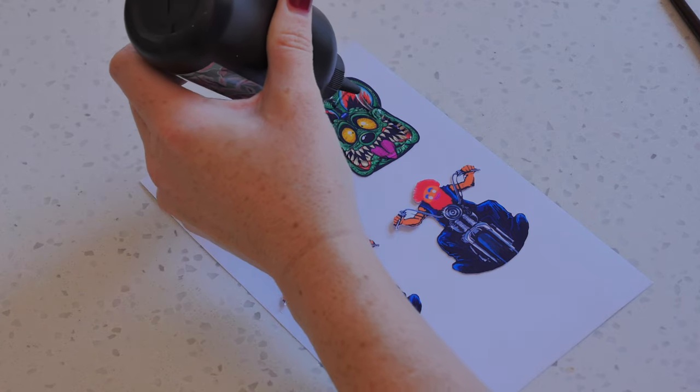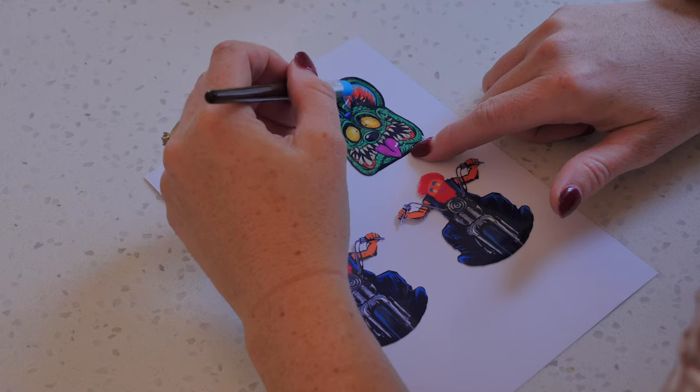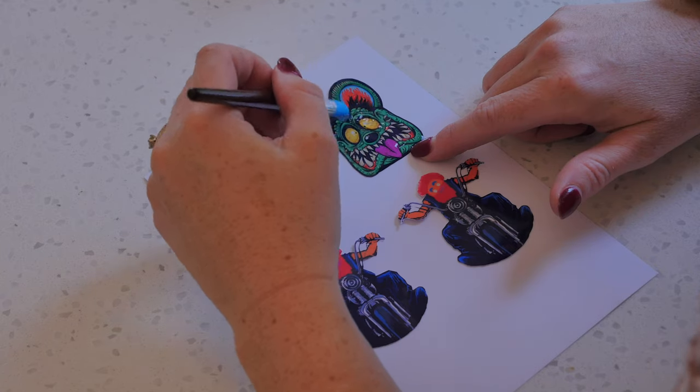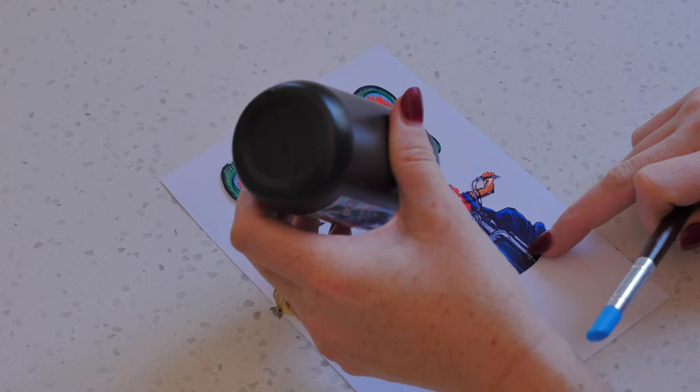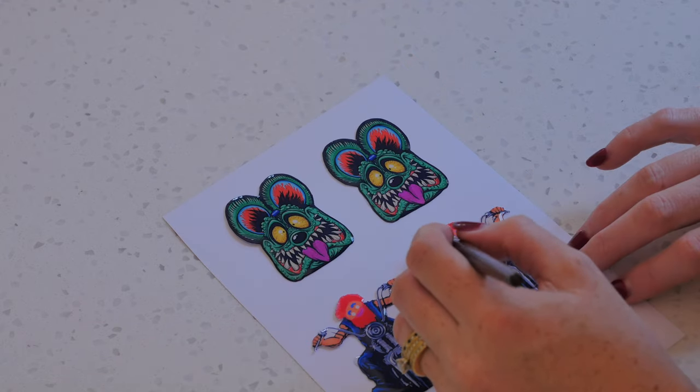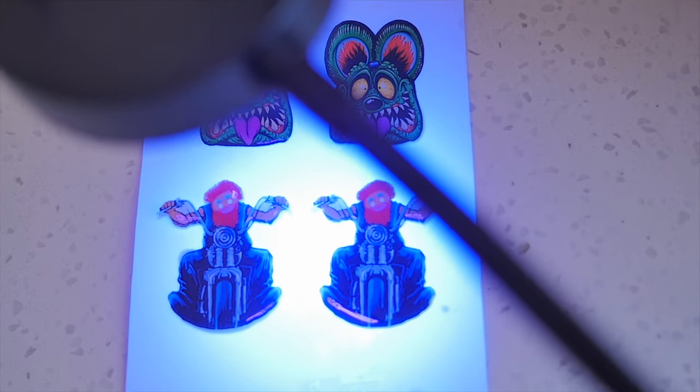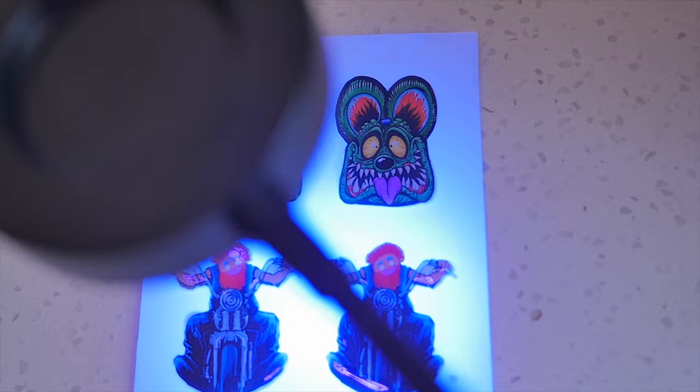Because I have an inkjet printer, what I have to do is cover these images in a quick setting UV resin. Now the reason why I'm using a UV resin is because if I set my images straight into the resin, which is a slow curing resin that takes approximately 24 hours to harden, then the ink's going to run into the resin. So with the UV resin, it's fast curing and the ink's not going to run.